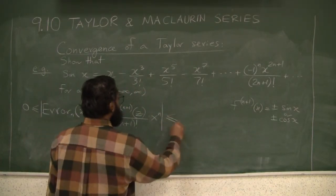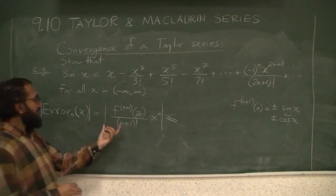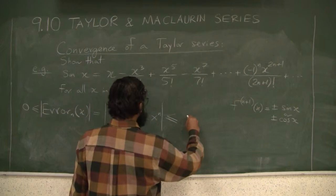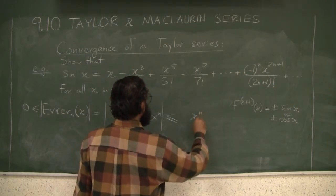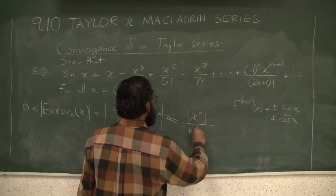So this, what is the biggest this can get? The absolute of these values. So this is less than or equal to |x|^n over (n+1) factorial.